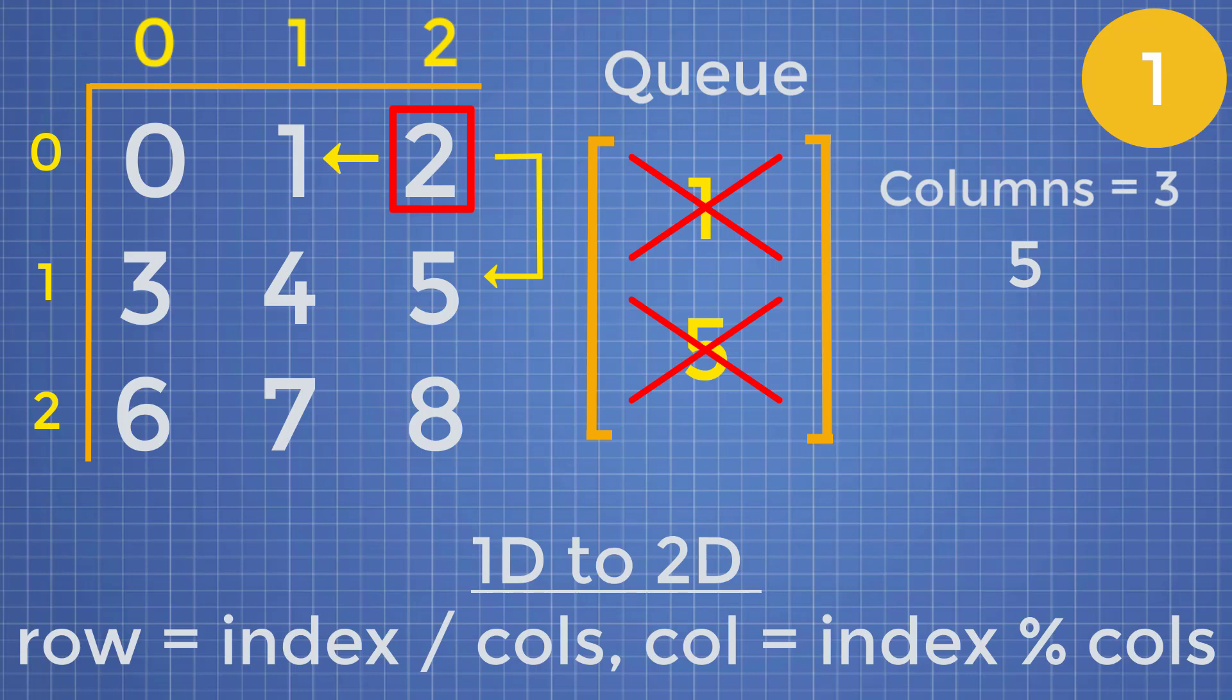Likewise, if we were to perform the same logic on the value 5, we're going to do 5 divided by 3, which would be 1, and then 5 mod 3, which would be 2. And now we have the coordinate 1, 2, which corresponds to the vertices 5. So although this method does involve the use of formulas, they aren't too complicated to understand, and they will allow you to write far less code when you're implementing your BFS solution.